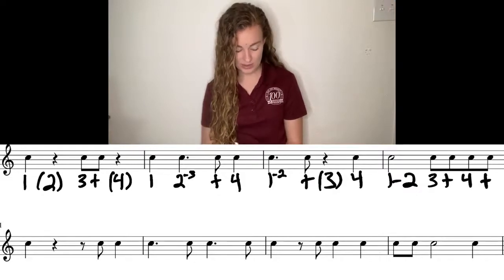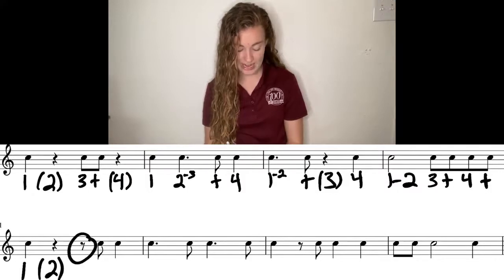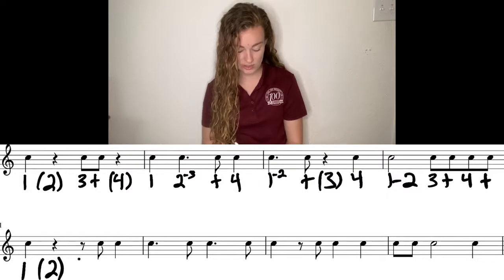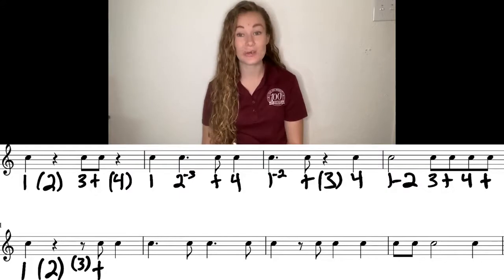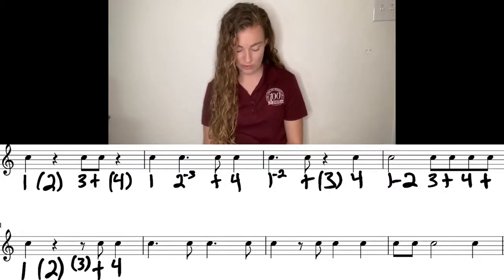Next line starts with a quarter note, quarter rest on beat two. And then we have an eighth rest. So because we already took out beat two, we know that that eighth rest is going to be on beat three. The eighth note is going to be on the and of three, because the eighth rest only takes up the first half of beat three, which means this quarter note is on beat four.